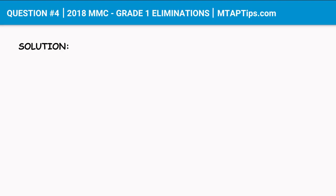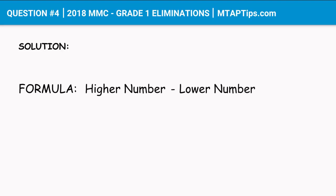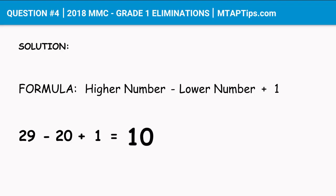Or you can simply use the formula: the higher number minus the lower number plus 1. We get 29 — the highest number with two tens — minus 20, the lowest number with two tens, plus 1, which is equal to 10.